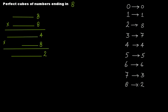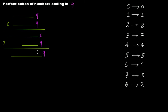Finally, if your number ends in 9: 9 times 9 is 81 — 8 carried over, 1 at units place. Then 9 times 1 is 9 at the units place. So if your number ends in 9, the perfect cube also ends in 9.